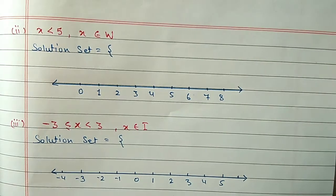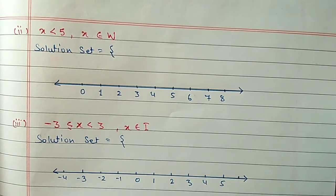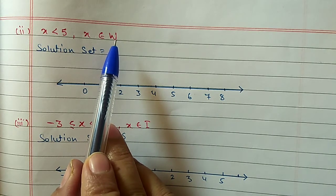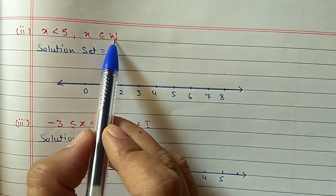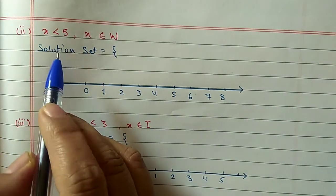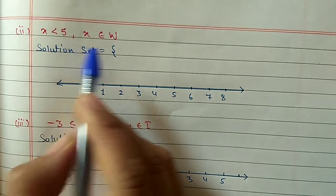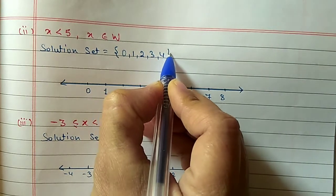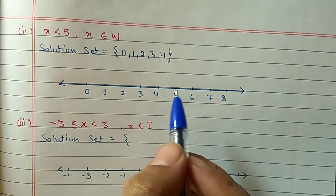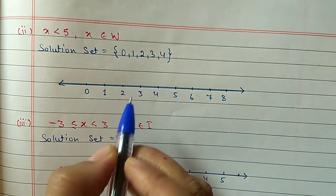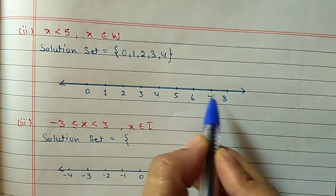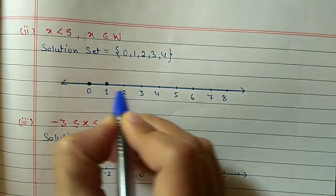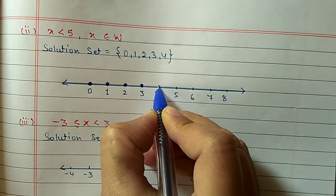Second part: x less than 5, where x belongs to whole numbers. Whole numbers start from 0 and go to infinity. Less than 5 means we stop at 4. So the values are 0, 1, 2, 3, and 4. Draw a number line, mark the whole numbers, and highlight 0, 1, 2, 3, and 4.